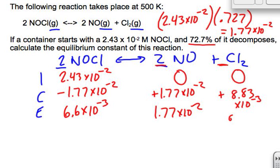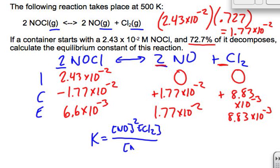Now to calculate the equilibrium constant. K equals the products over reactants: NO squared times Cl2 divided by NOCl squared. I'm going to plug in the equilibrium numbers to get my K value.